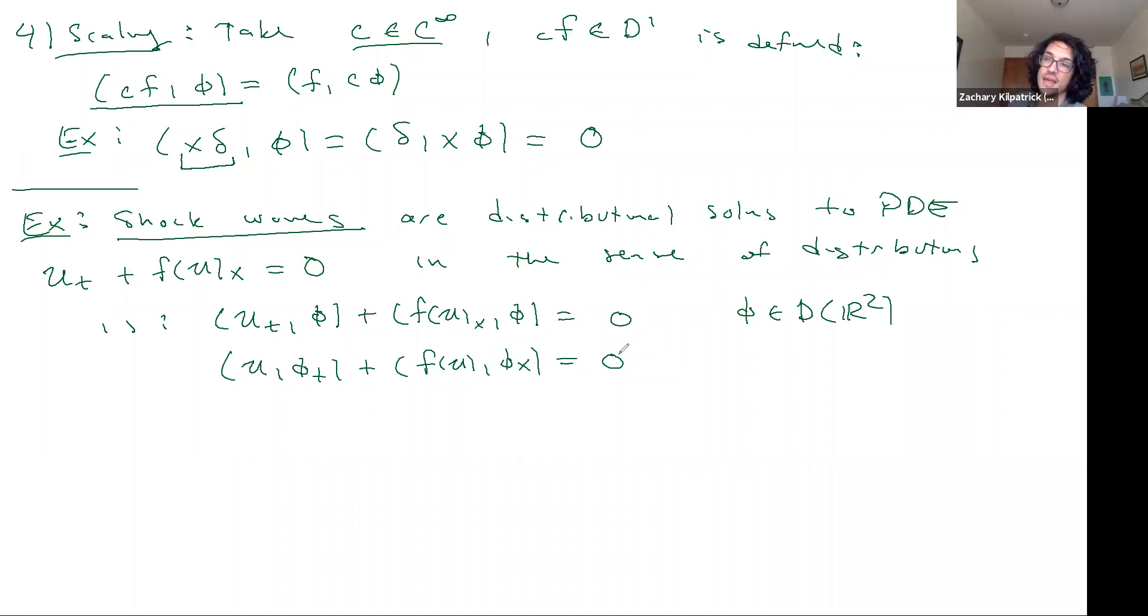Now, let's say that we solve this problem and we end up with a solution that has a jump discontinuity. So I'll skip over going through a specific example.